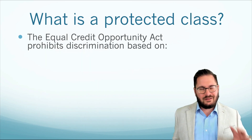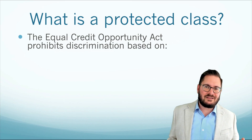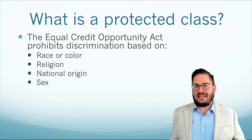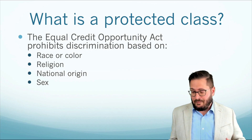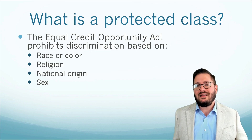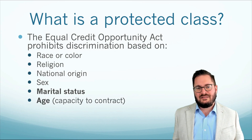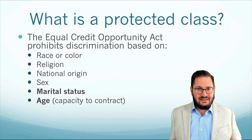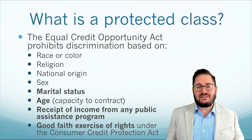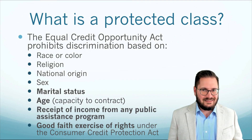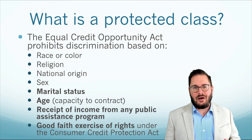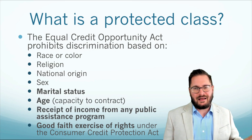The protected classes under ECOA are a little bit different, but there is some overlap. A protected class under ECOA includes race or color, religion, national origin, and sex — the same things we started with under the Fair Housing Act. However, ECOA does not include handicap. The additional items unique to ECOA include marital status, age (at least the capacity to contract), receipt of income from any public assistance program, and a good faith exercise of rights under the Consumer Credit Protection Act. The bold items represent those that are separate under ECOA, where the Fair Housing Act had a couple of different ones that did not apply to ECOA.